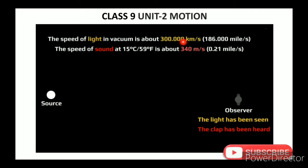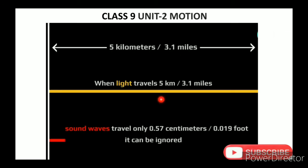The speed of light is 3×10⁸ meters per second. The speed of sound is 340 meters per second. Here the distance is approximately 5 kilometers.